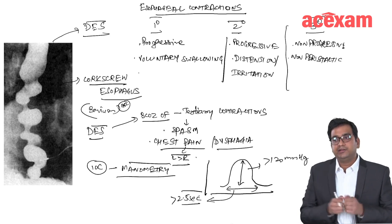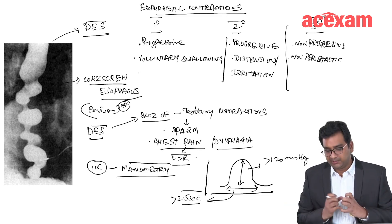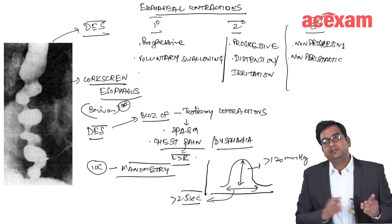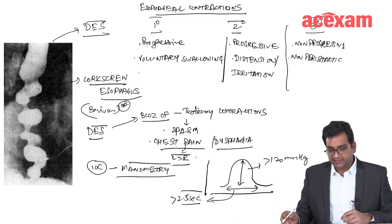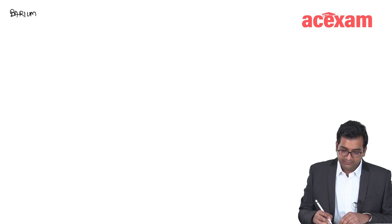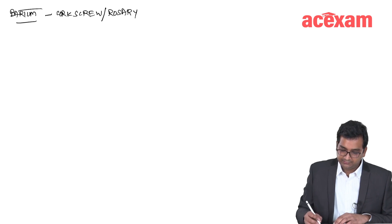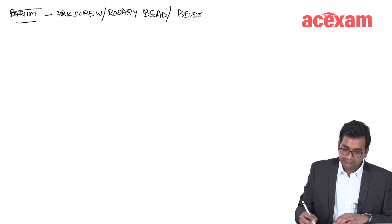On manometry, we expect an amplitude of more than 120 mmHg and a time duration of more than 2.5 seconds for the contraction. This spastic tertiary contraction occurring for more than 2.5 seconds confirms the diagnosis of diffuse esophageal spasm. On barium swallow, we see corkscrew esophagus, rosary bead appearance, or pseudo-diverticula appearance.